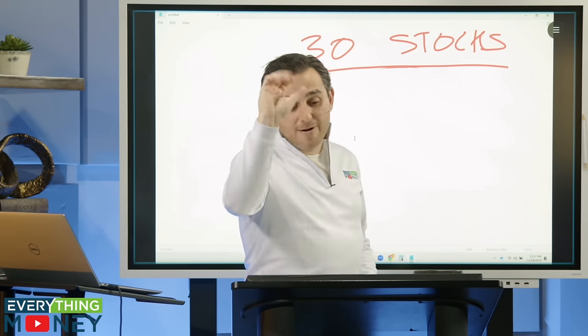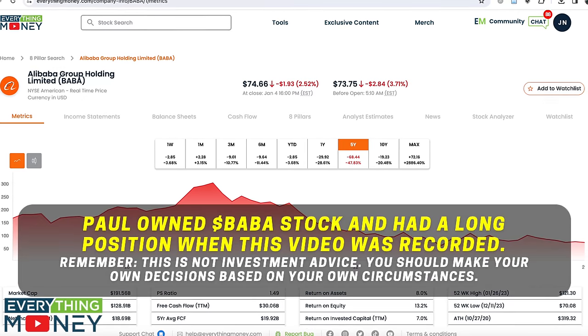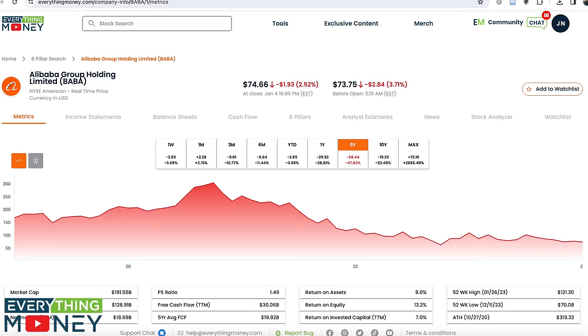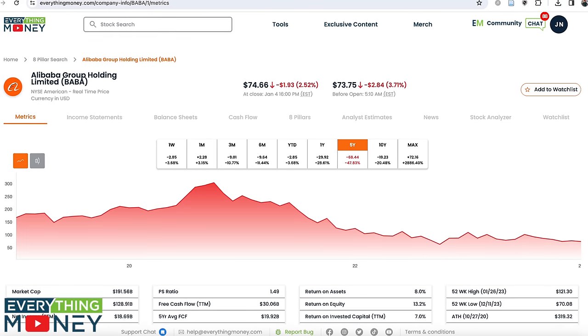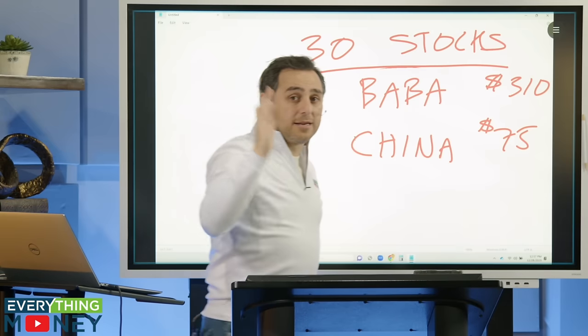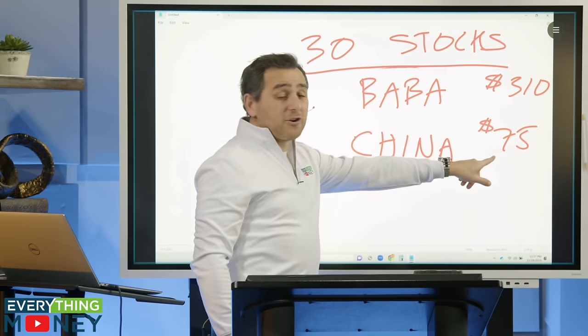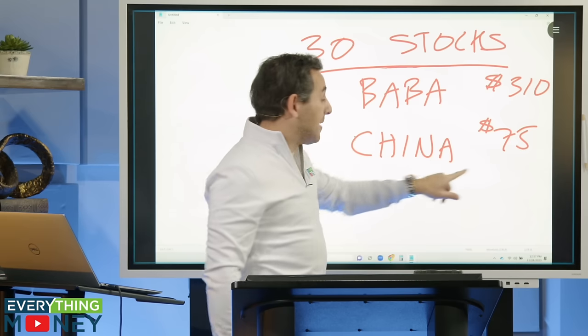Stock number five, Alibaba. Again, I own Alibaba. This is all about China. This is the fear with Alibaba. Hit a high of around $310 a share. It's around 75 right now. I've been buying it as it went down below 120 or 130. Now, I have dollar cost averaged very low. I'm pretty happy about that.